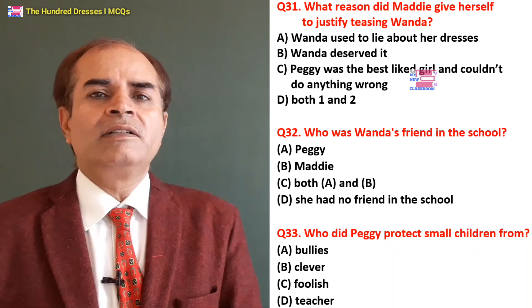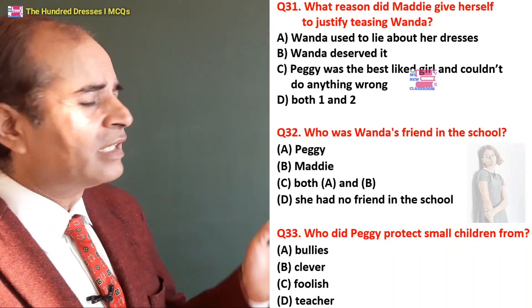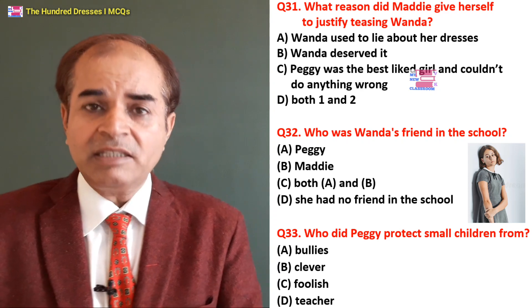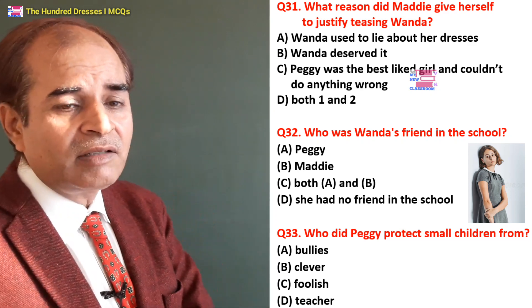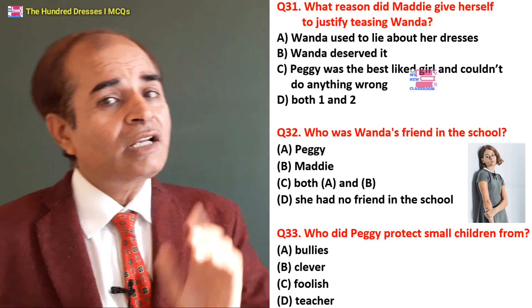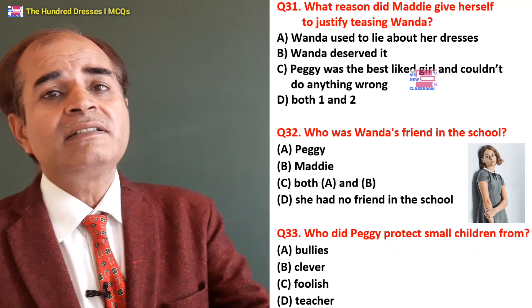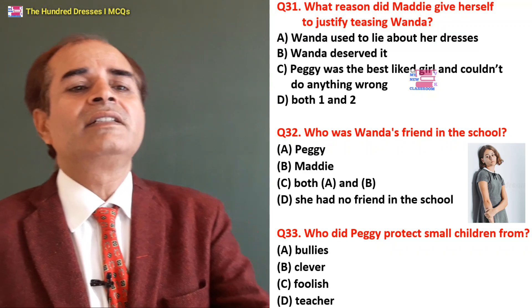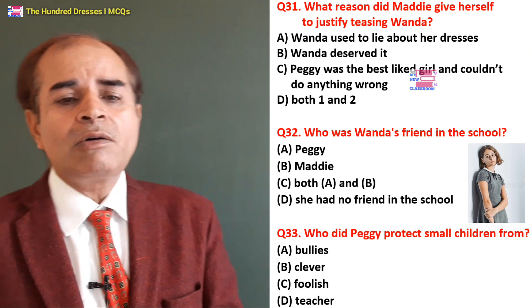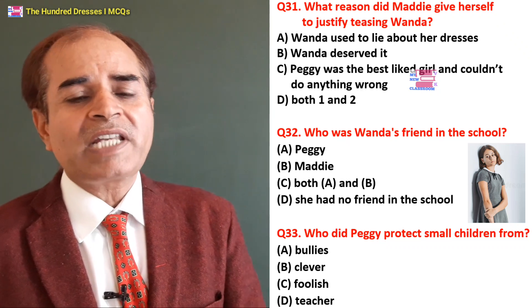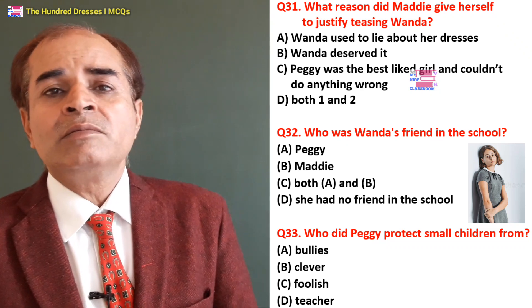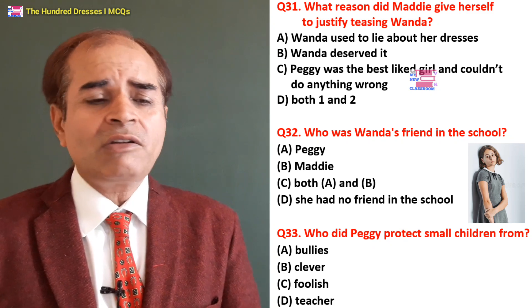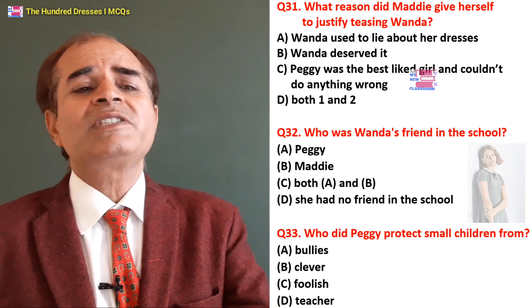Thirty-second question: Who was Wenda's friend in school? Peggy? Maddy? Both A and B? She had no friend in the school — yes. D is the right answer. Thirty-third question: Who did Peggy protect? Small children from bullies — yes. From clever people? Foolish? Teacher? No — she protected small children from bullies. A is the right answer.